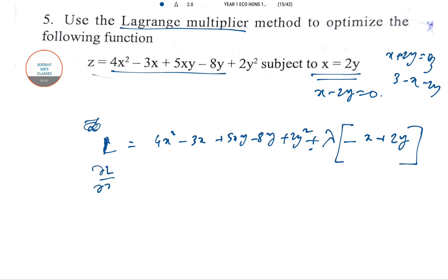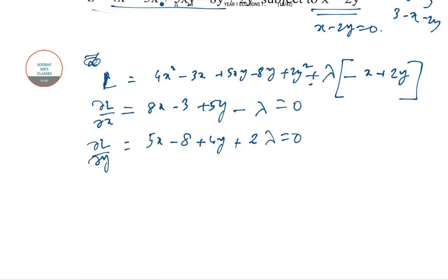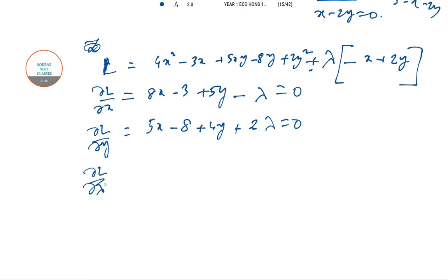Now afterwards you have to do del L del x, the partial derivative of the entire formation with respect to the first independent variable, that is x. So which is 8x minus 3 plus 5y, this part is done, and only minus lambda. And del L del y.